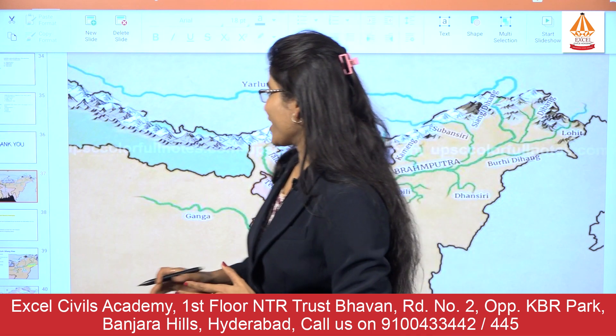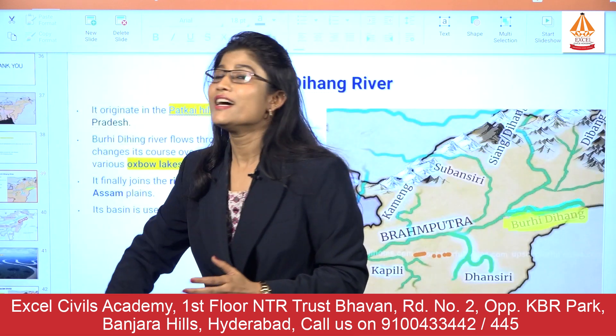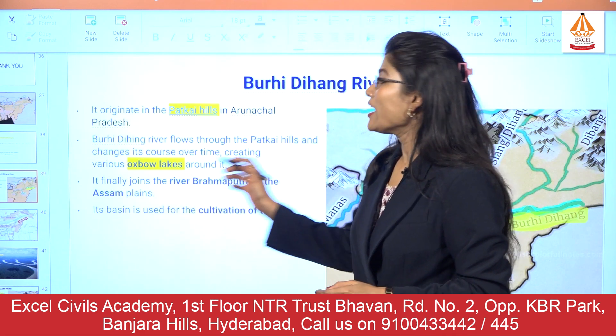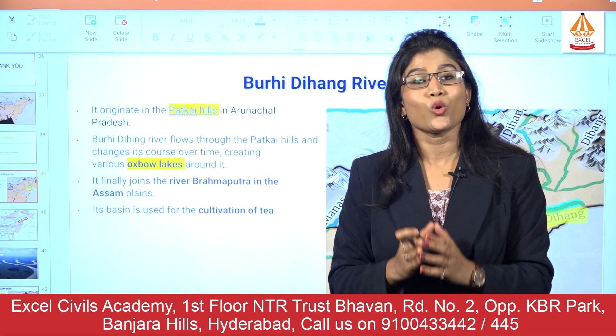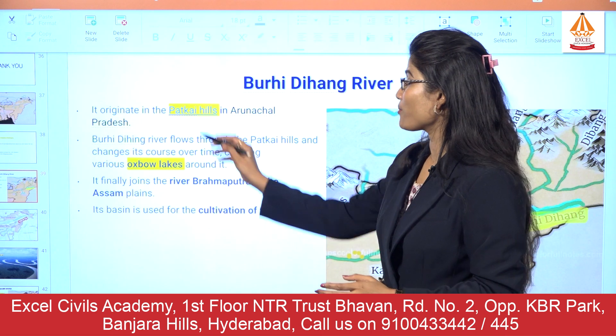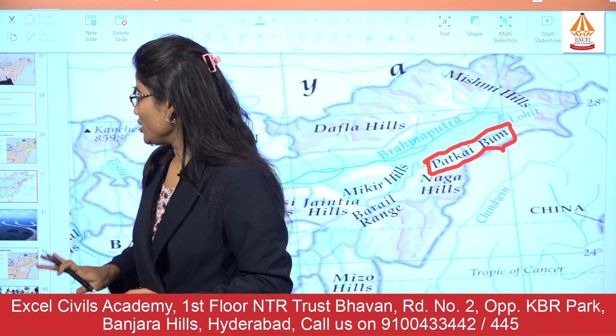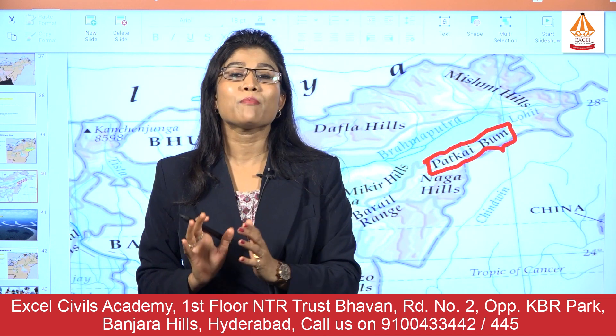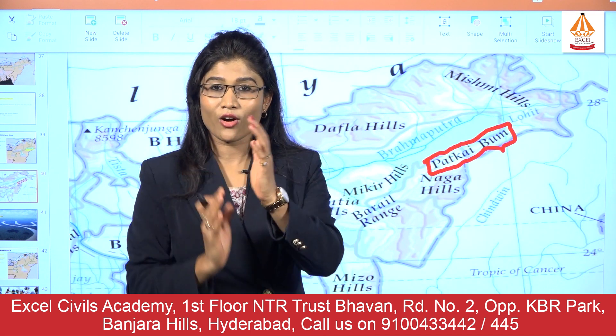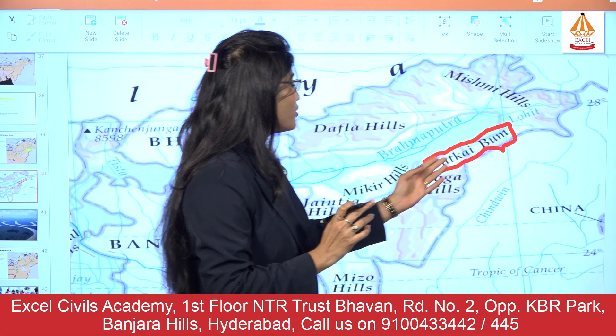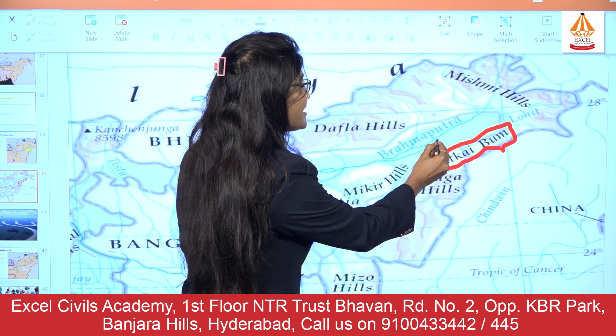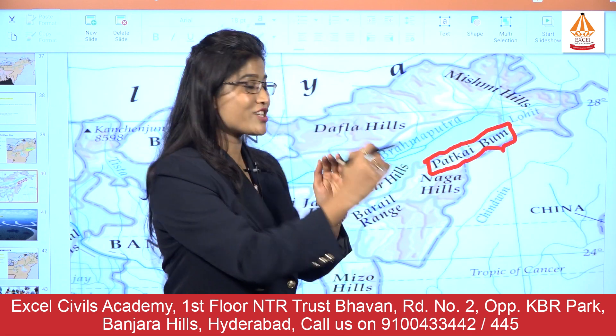Now we will understand the river Buri Dihang. This river originates in Arunachal Pradesh from the Patkai hills. The Patkai hills are in the southeastern part of Arunachal Pradesh on the border with Nagaland. There is a Patkai Bum hill range, and from this Patkai Bum hill range the Buri Dihang river originates and takes a U-turn, flowing in the northwestern direction.